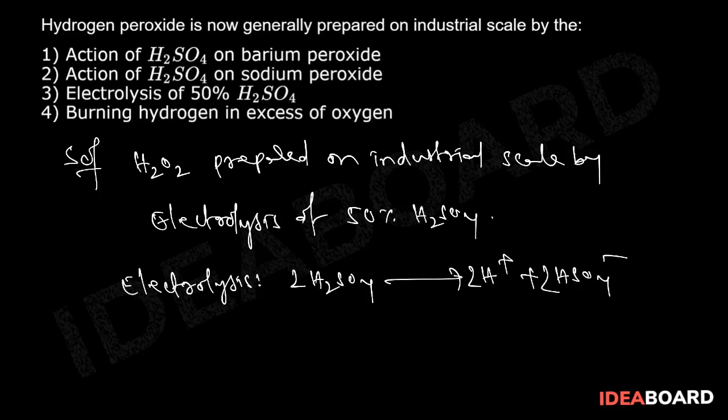The anion will go towards the anode, and the cation will go towards the cathode. At the anode, oxidation will take place, which means loss of electrons.